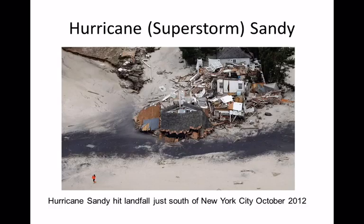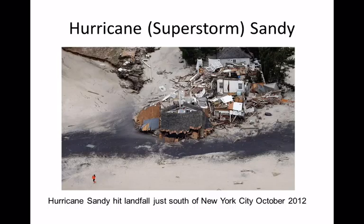Superstorm Sandy started out as a Category 2 hurricane but traveled up the coastline into the New England states, which don't normally see that activity. It was notable because it hit during a full moon when the moon was at perigee, making tides even stronger. What would have been an extraordinary high tide, Sandy used to cause significant water damage.